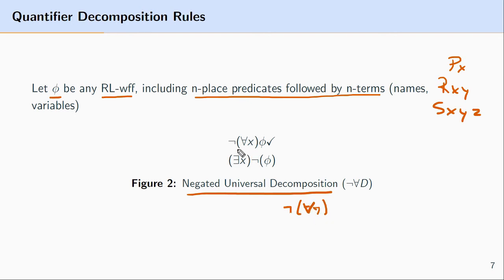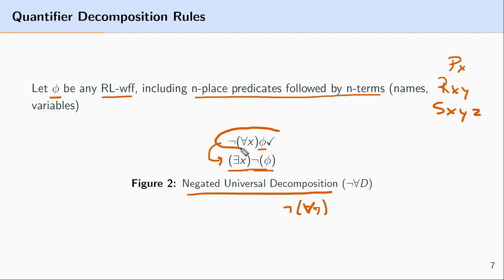In the case of negated universal decomposition, we represent the condition under which this formula is true in terms of an existentially quantified formula that ranges over the negation of φ. We're replacing the negated universally quantified formula with one that it's equivalent to. These two things say the same thing, but they say it in a different way.